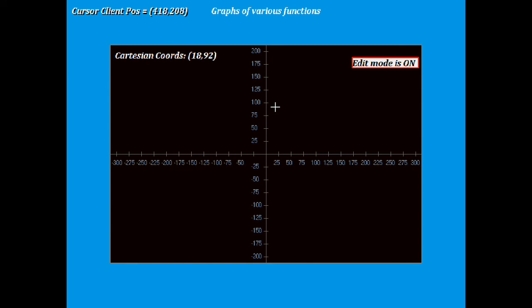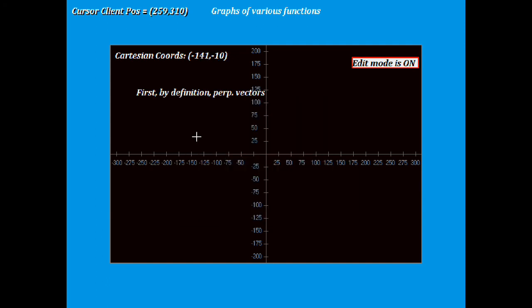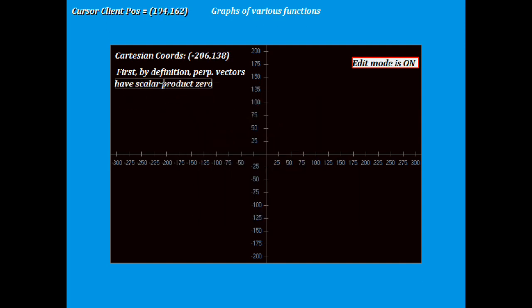Now that we've proven that, the next thing is: first, it is evident by definition that perpendicular vectors have scalar product zero, because the angle between them is 90 degrees, so they don't have any projection along either of them.